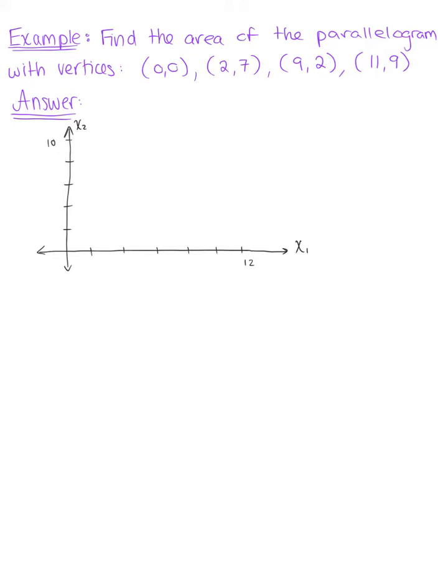So let's start by sketching a graph of this. We have our first vertex at the origin. We have another vertex at (2,7), so right about 2, 8, so right about here at 2, 7.